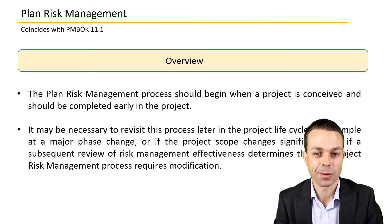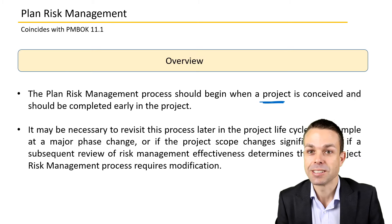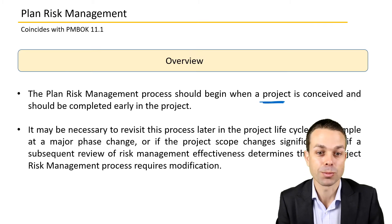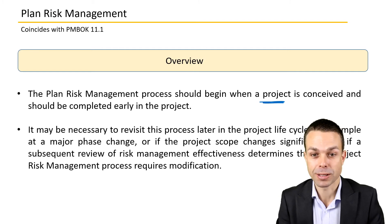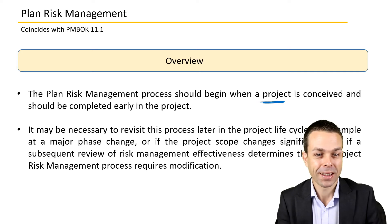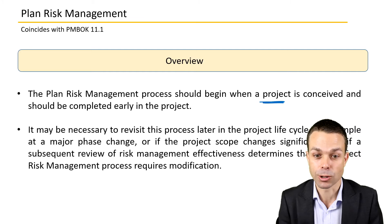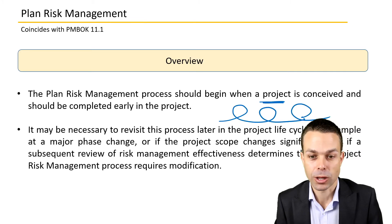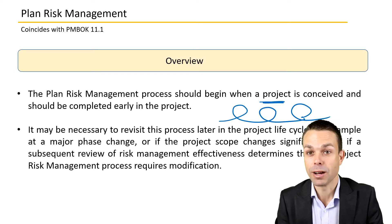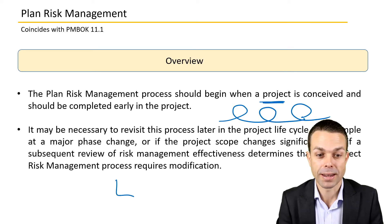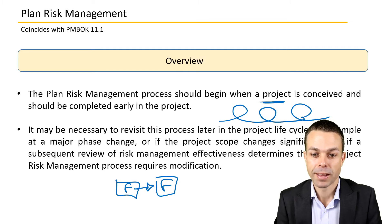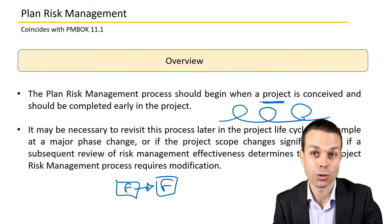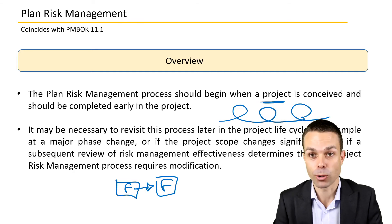Here's an overview of planning risk management. It should begin when a project is conceived — right at the very beginning — and should be completed early in the project, basically when we're creating our project management plan. It may be necessary to revisit this process later, as we might be iterating and adding bits and pieces as we go along. For example, at major phase changes: if we've delivered a feature and are moving on to another, we may need to revisit the risk. And if we need to take action to mitigate a risk, we may need to change our approach as we go along as well.